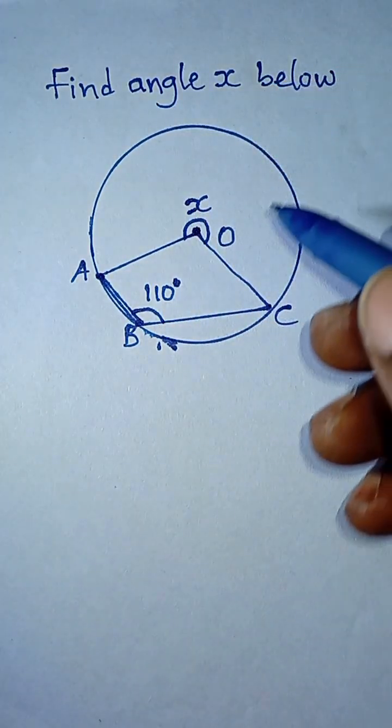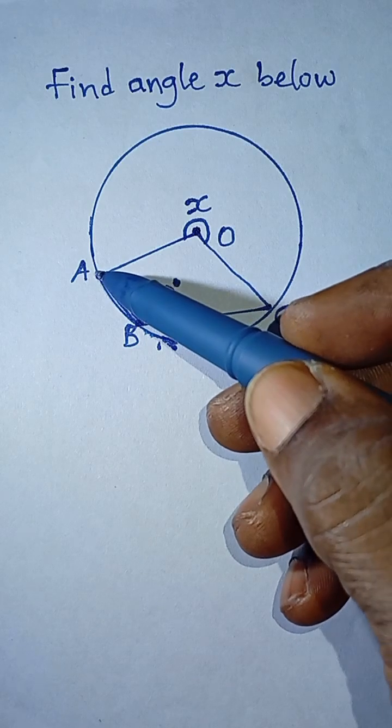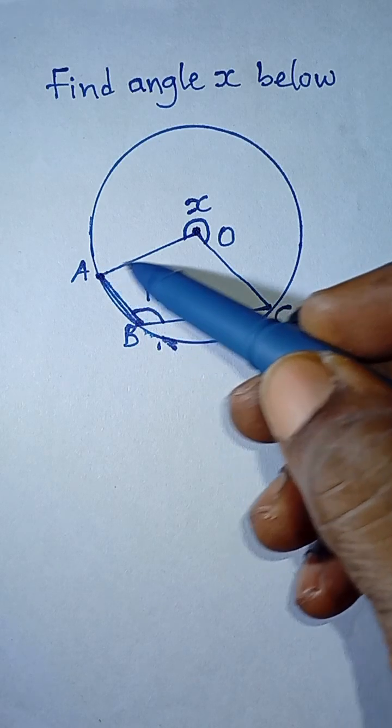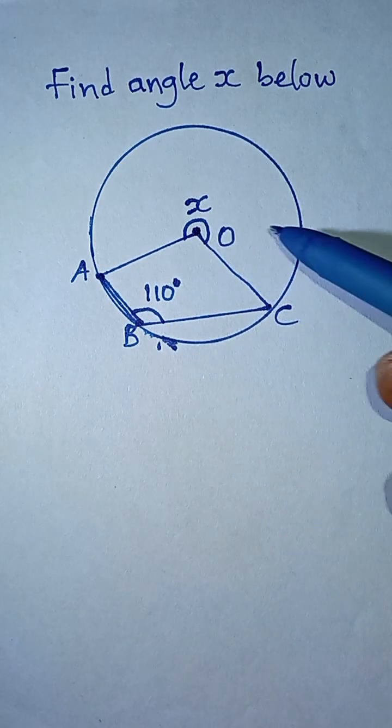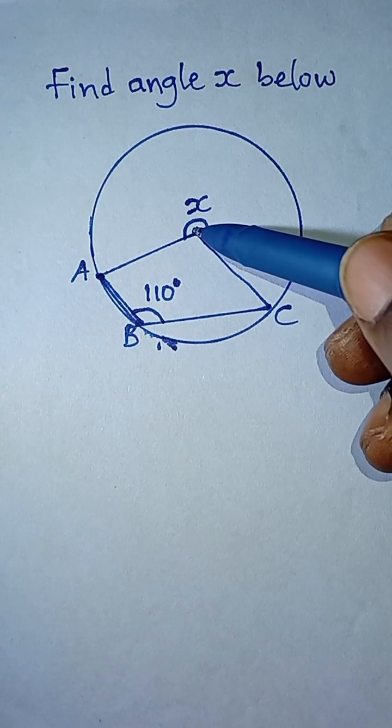Find angle X below. If you look at this diagram, a line starts from point A and moves to the center O. Another line starts from point C and moves to the center O.